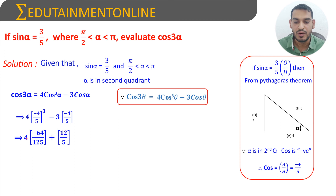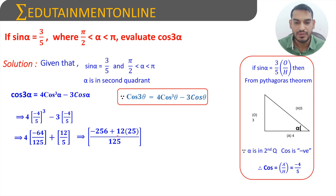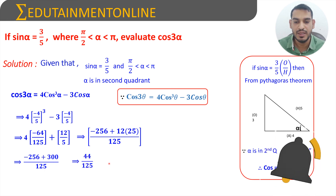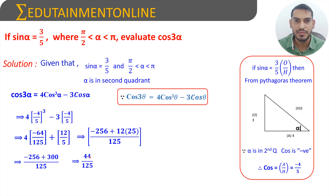So 4 × (−64/125) + 12/5 gives −256/125. To equate the denominators, we multiply 12/5 by 25/25 to get 300/125. Therefore, −256 + 300 over 125 equals 44/125. Hence cos 3α equals 44/125.